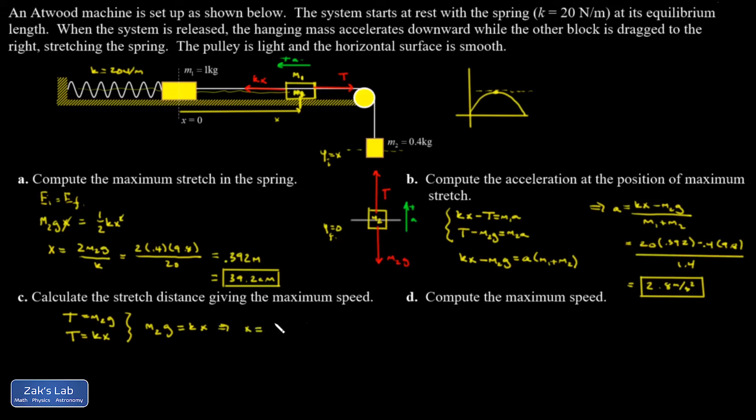And I can solve for x, and I get x equals m2g over k, which is 0.4 times 9.8 over 20. And I get a stretched length of 0.196 meters or 19.6 centimeters. And notice that there's a nice symmetry to this problem that the maximum speed occurs exactly halfway along the path to the maximum stretch. So that 19.6 is exactly half 39.2.